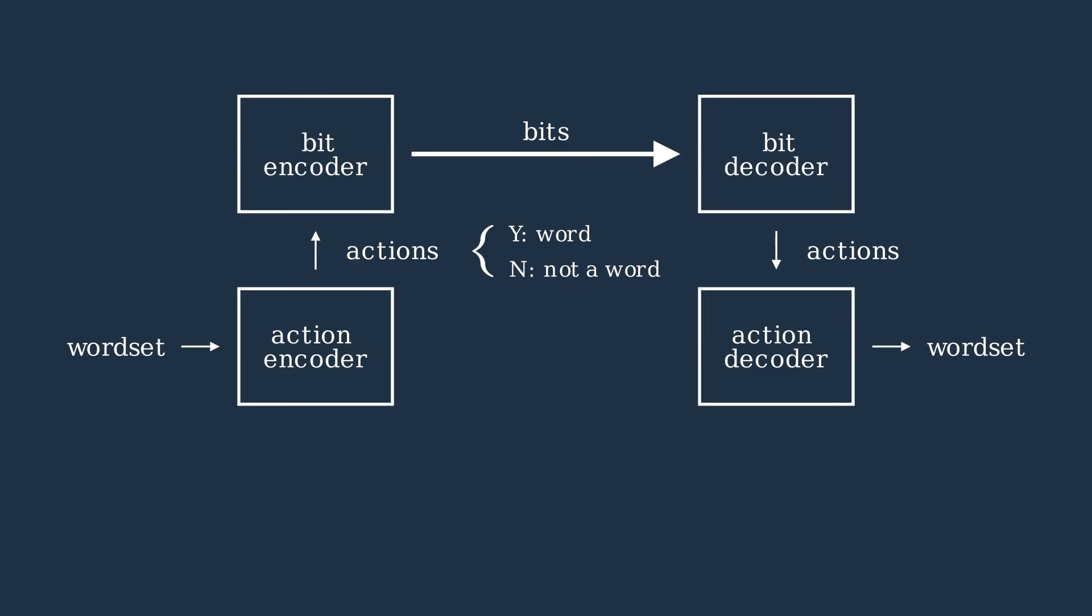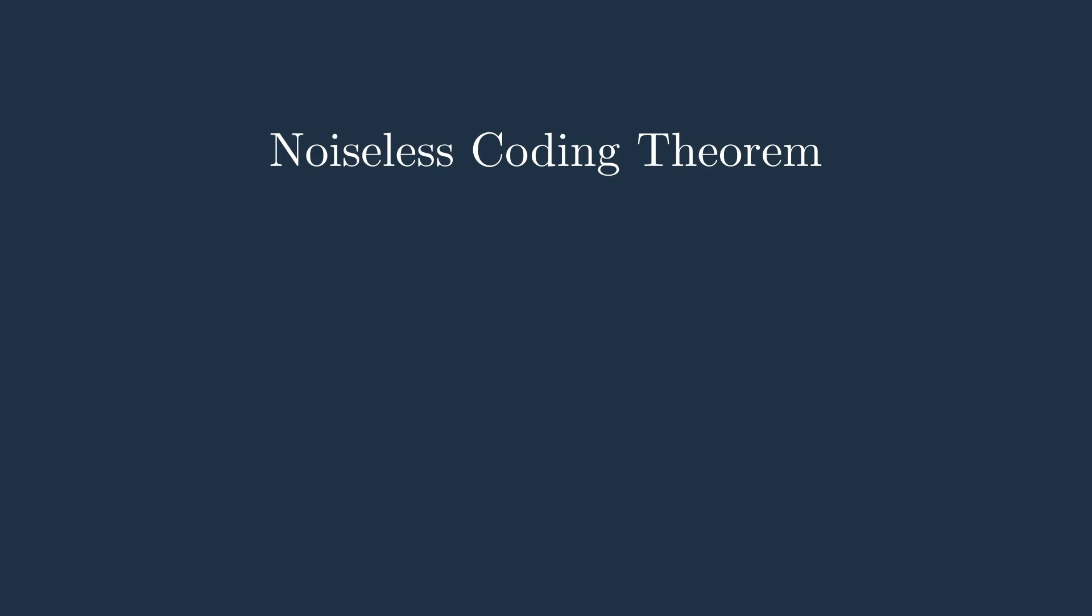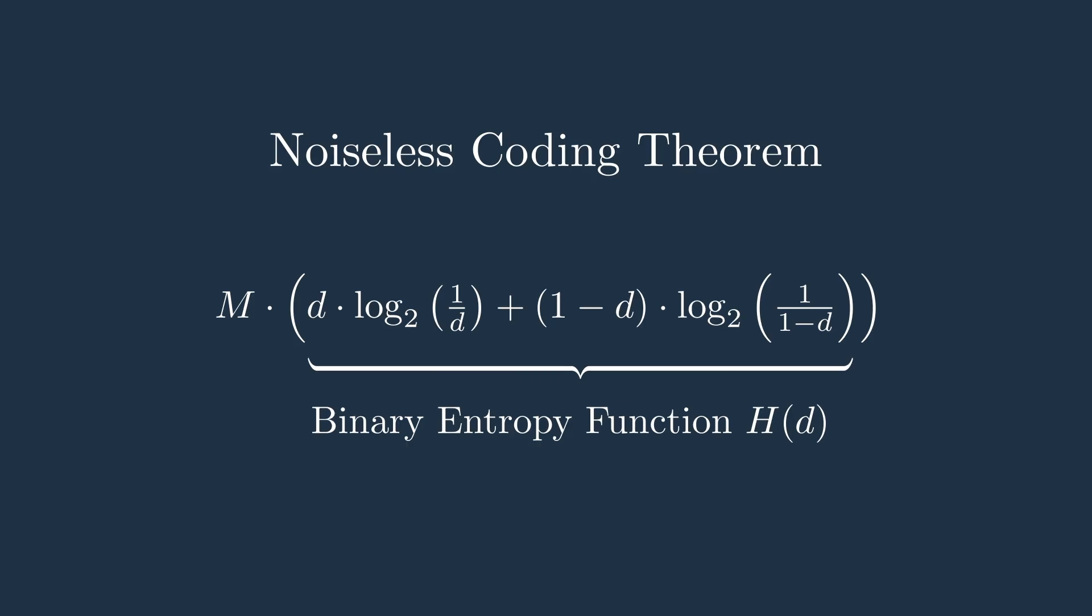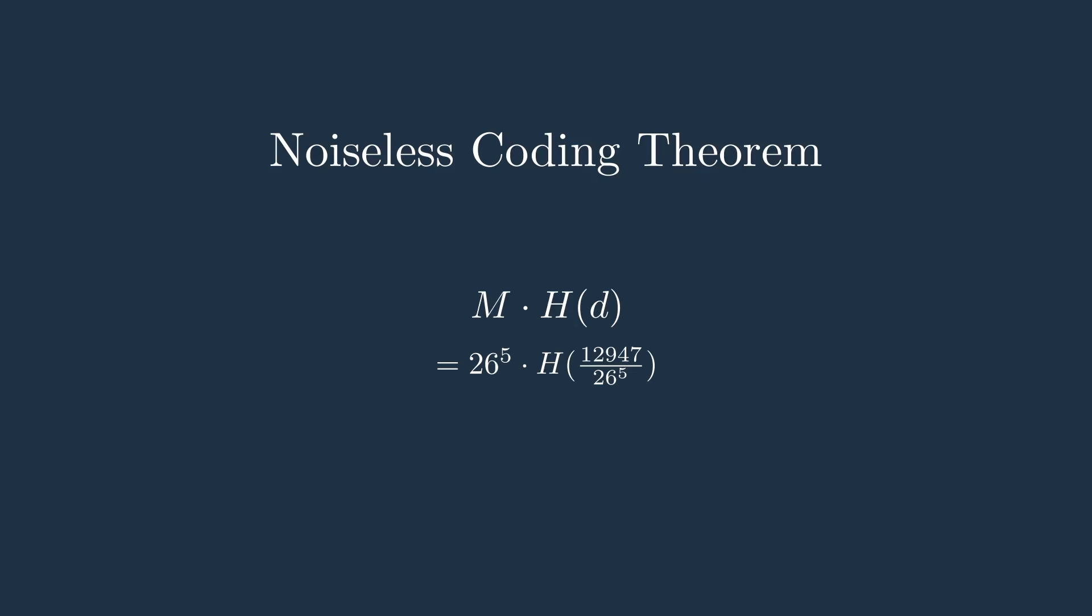We define two kinds of action. Y means yes this string is a word, and N means no this string is not a word. Out of 26 to the 5th power total actions, 12,947 of them are Y. Let's call this fraction d, for density. The noiseless coding theorem tells us that we can encode these actions using approximately log base 2 of 1 over d bits for each Y, and log base 2 of 1 over 1 minus d bits for each N. We can add those expressions up to get an estimate for the total number of bits needed. And we can rewrite the estimate in terms of the binary entropy function H.